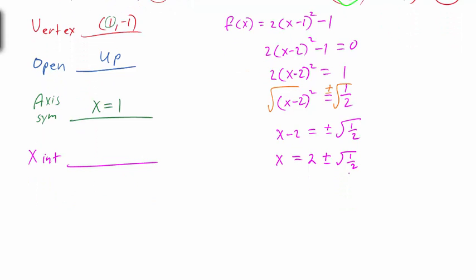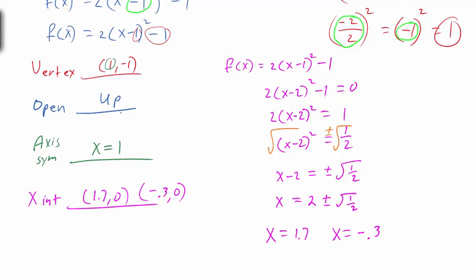We can leave the answer as x = 1 ± √(1/2), which gives our two x-intercepts. Or we can calculate: 1 + √(1/2) ≈ 1.7, and 1 - √(1/2) ≈ -0.3. So the x-intercepts are approximately (1.7, 0) and (-0.3, 0). The vertex is (1, -1), it opens up, axis of symmetry is x = 1, crossing at roughly 1.7 and -0.3 on the x-axis.